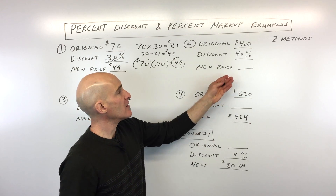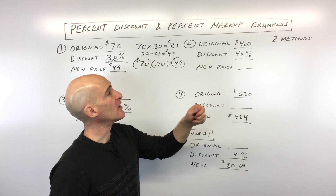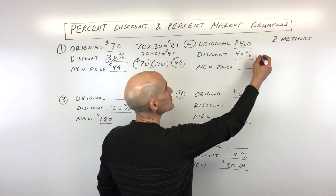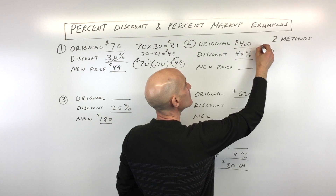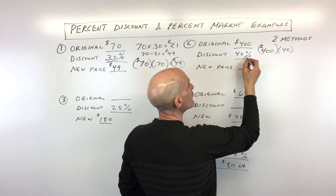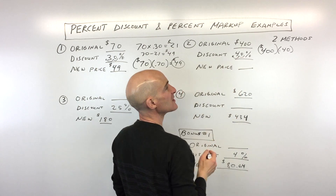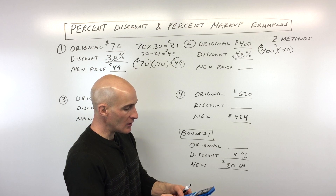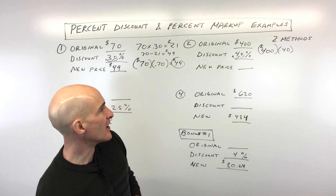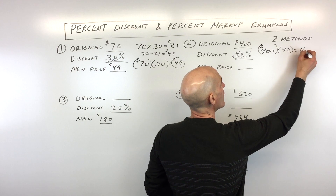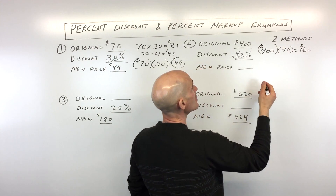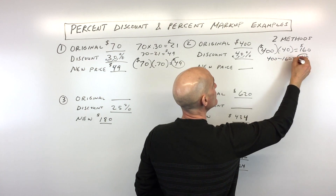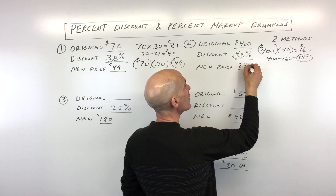We want to find out what the new price is. Using method one: the discount is 40%, so take $400 multiplied by 0.40 as a decimal. That gives us $160 — meaning you're saving $160. So 400 minus 160 equals the new price of $240.